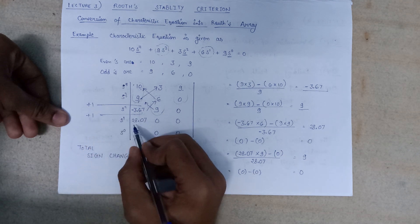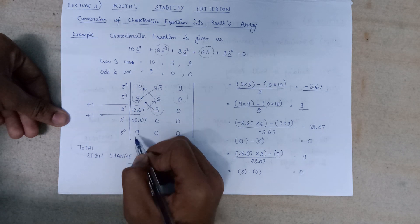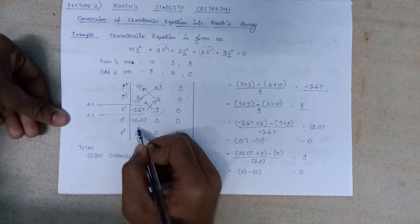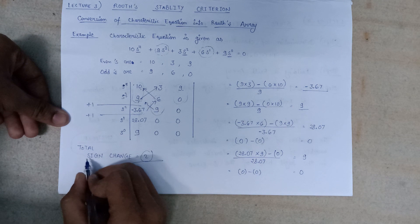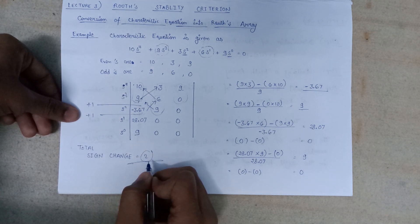After that, 28.07 is a positive number and then 9 is also positive. So no sign changes there.